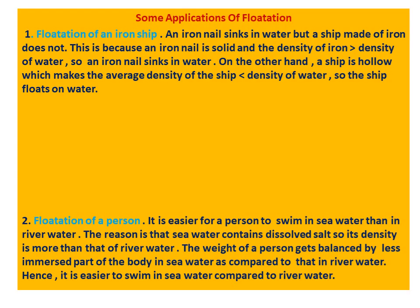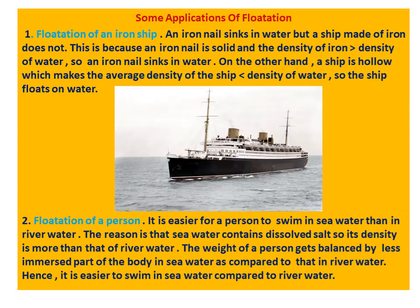Application one — floatation of an iron ship: an iron nail sinks in water, but a ship made of iron does not. This is because an iron nail is solid and the density of iron is greater than the density of water, so it sinks. On the other hand, a ship is hollow, which makes the average density of the ship less than the density of water, so the ship floats.